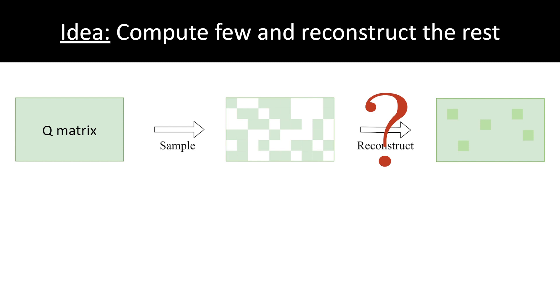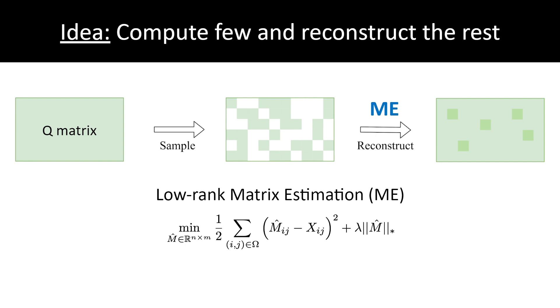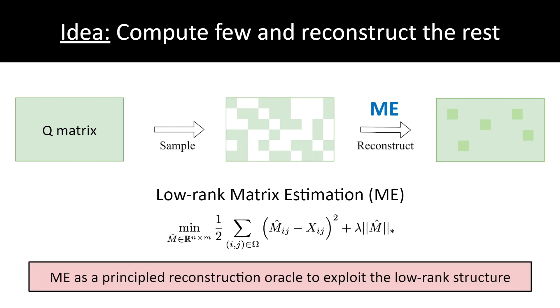But the problem comes. How should we exactly recover the structured matrix? Well, we can resolve this by applying matrix estimation. Matrix estimation considers the problem of recovering an underlying true data matrix based on incomplete and noisy observations. This is possible when the matrix contains some global structures, in particular, being low rank. In fact, ME is theoretically guaranteed with rich algorithms, such as the following convex optimization approach, which solves the nuclear norm-regularized problem. With the maturity of this field, in this work, we view ME as a principled reconstruction oracle to exploit the low rank structure.